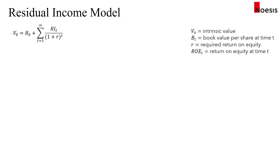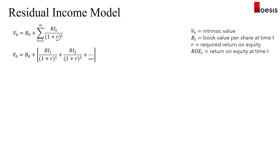Let's look at the residual income model, where the intrinsic value per share V0 equals the current book value per share B0, plus the present value of residual income. RI sub t is the residual income at time t, discounted using r, the required return on equity or cost of equity. Expanding the summation, we have RI1 over (1+r)^1 plus RI2 over (1+r)^2, continuing to add the PV of all residual income.